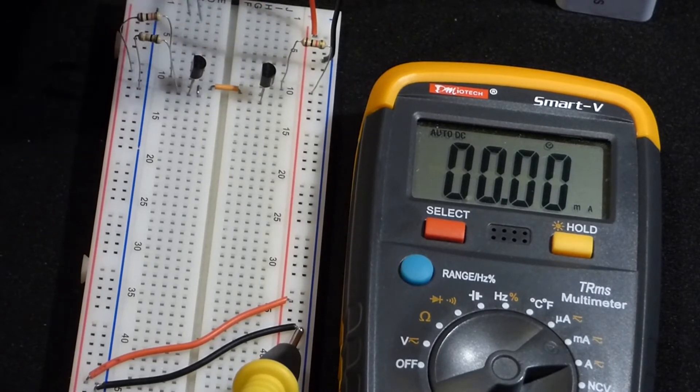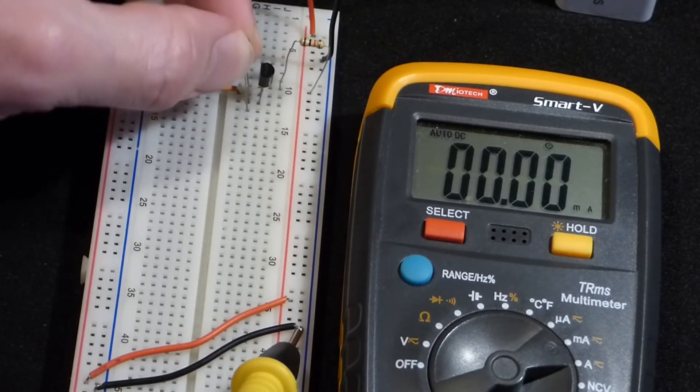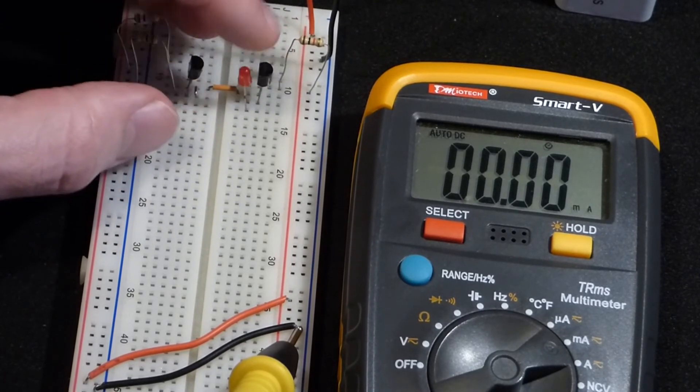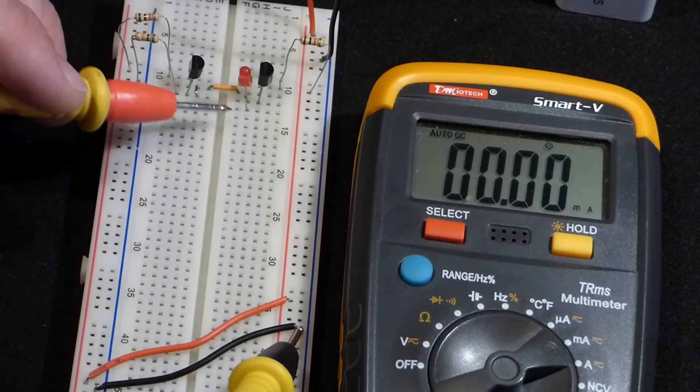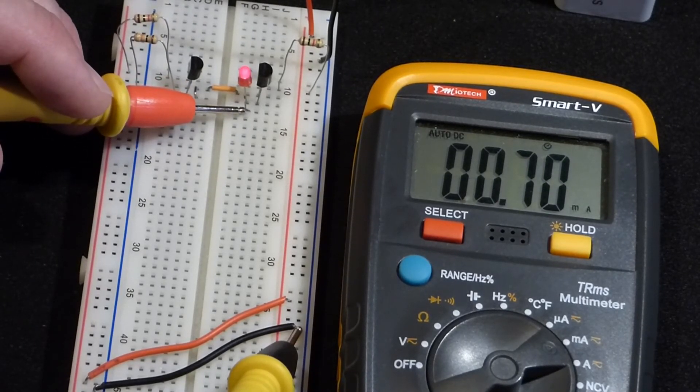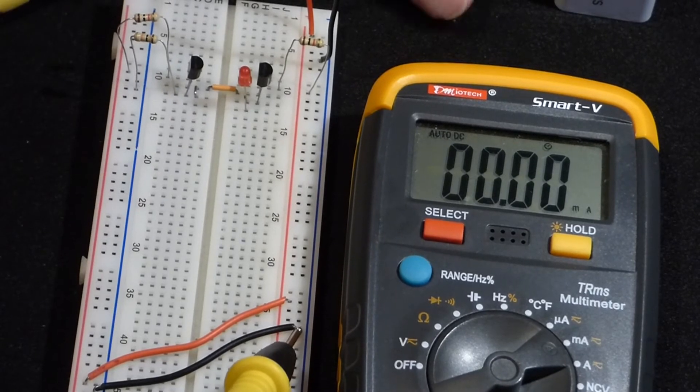Now we'll add a LED to the collector. So current is coming out of the collector and then through the LED, and again, about 0.7 milliamps, didn't really change.